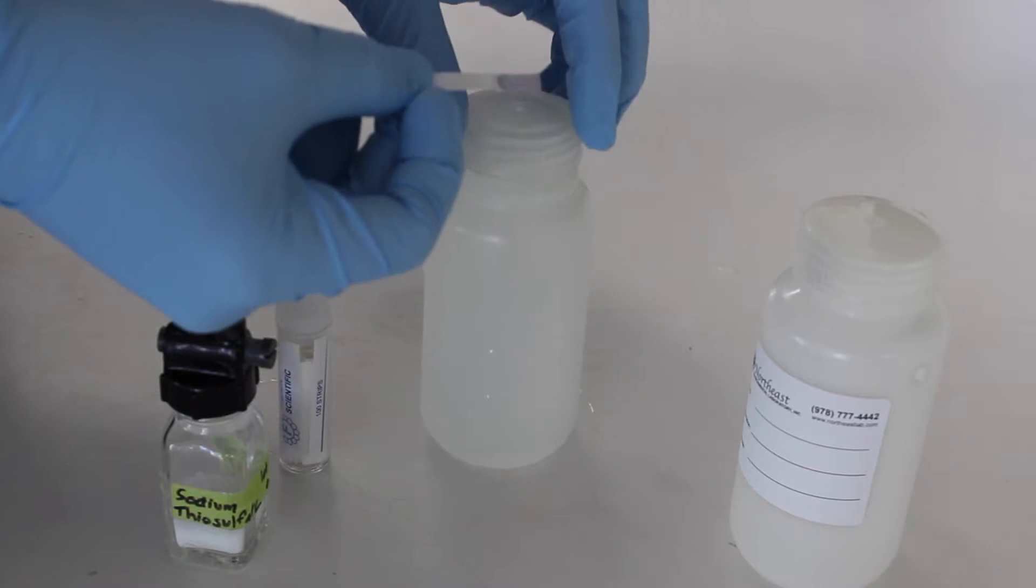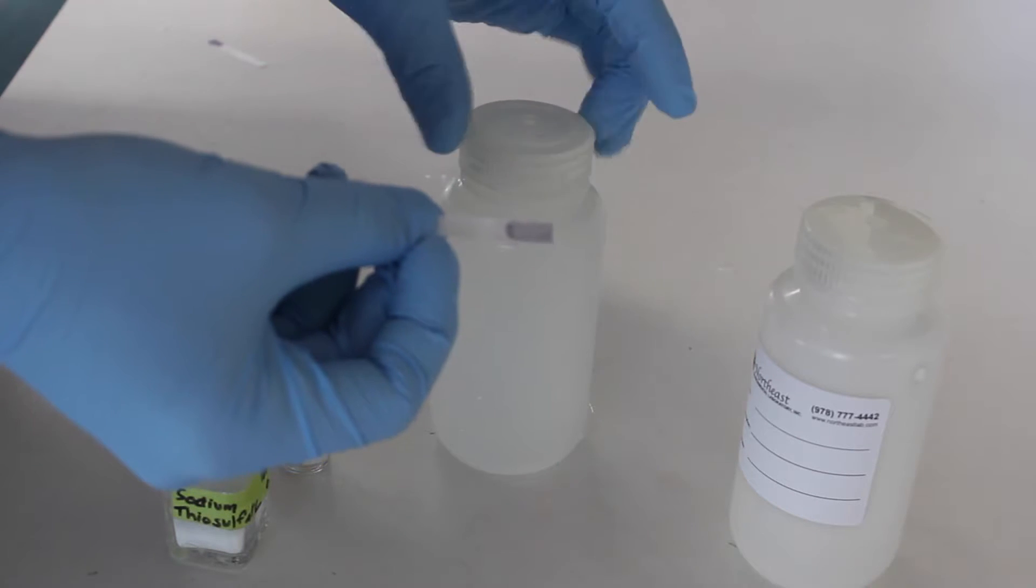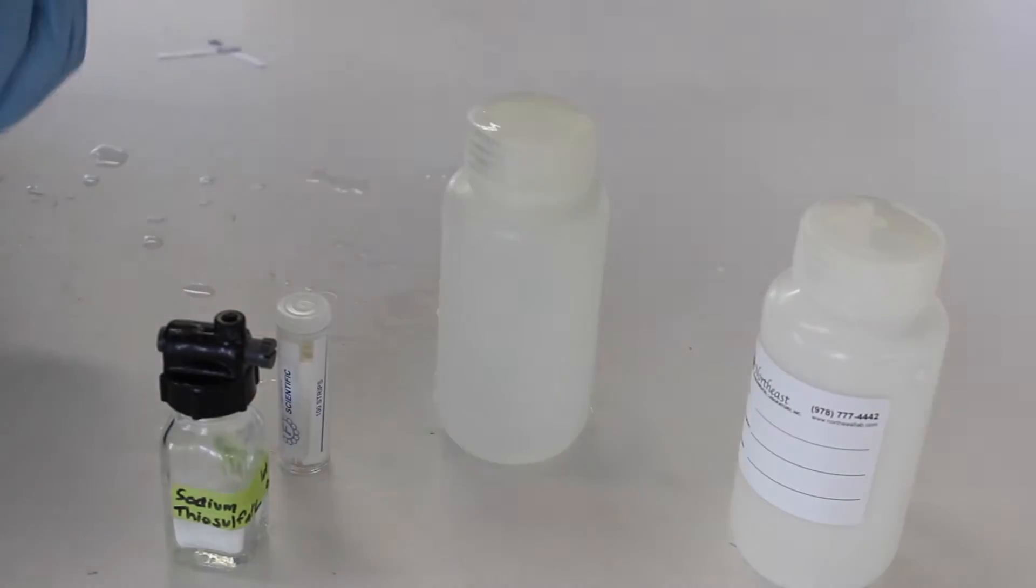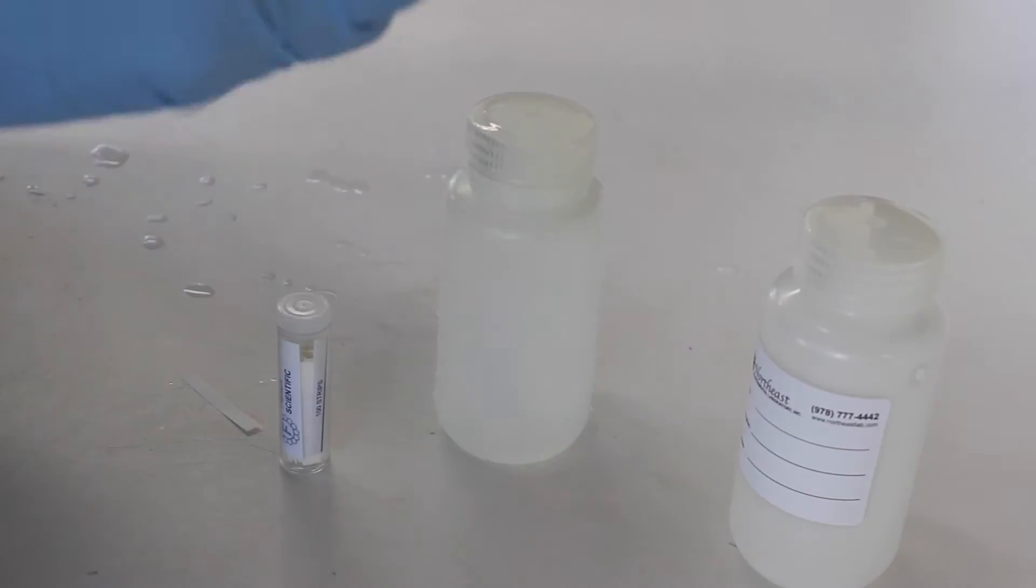Once you've collected your sample, test it with a potassium iodide test paper. If the paper turns black, indicating the presence of chlorine, add sodium thiosulfate and mix well.